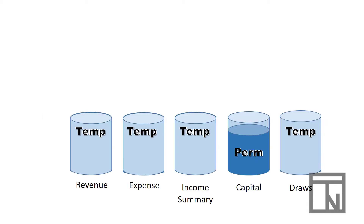So there are the four closing entries made as part of the closing process. If done successfully, all of the temporary accounts — like the glasses in our example — should be empty, and all of the money should be moved to capital. If that's the case, our closing entries are done and we're ready to move to our final steps.